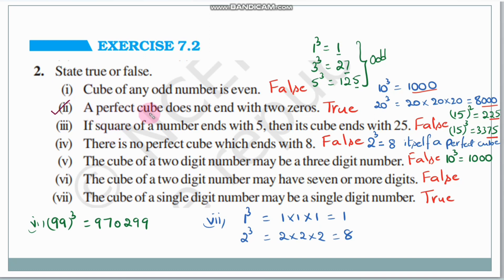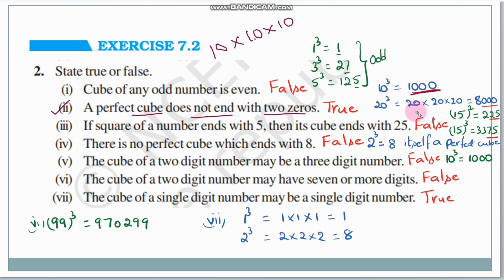Second statement. Here 1000 has three zeros. 20 cube — 20 into 20 into 20: 20 into 20 is 400, and 400 into 20 is 8,000. This is a true statement. Answer is true.